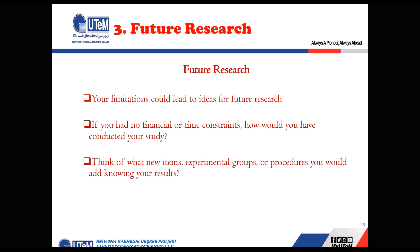The third part of the discussion section is future research. Whenever you give limitations, you have to give the solution to those limitations — and those solutions can lead to ideas for future research, so that later students know what they can do and how they can improve the research. If you had no financial or time constraints, how would you have conducted your study? You have to explain that in this section so the examiner can see that the student understands how results could have been improved.